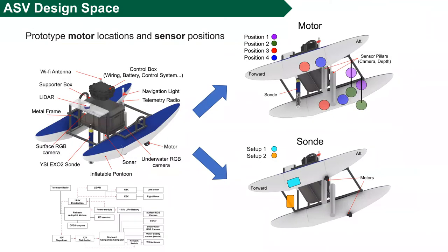Based on the prototype design with all the essential components, our design space was circumscribed to the location of motors and sensors. These are the main underwater components for a surface vehicle. The design space was determined by considering draft, trim, hull, stability, propulsion, and more. The following evaluation scheme will show how we validate the sensor interference and make a decision on the design space.